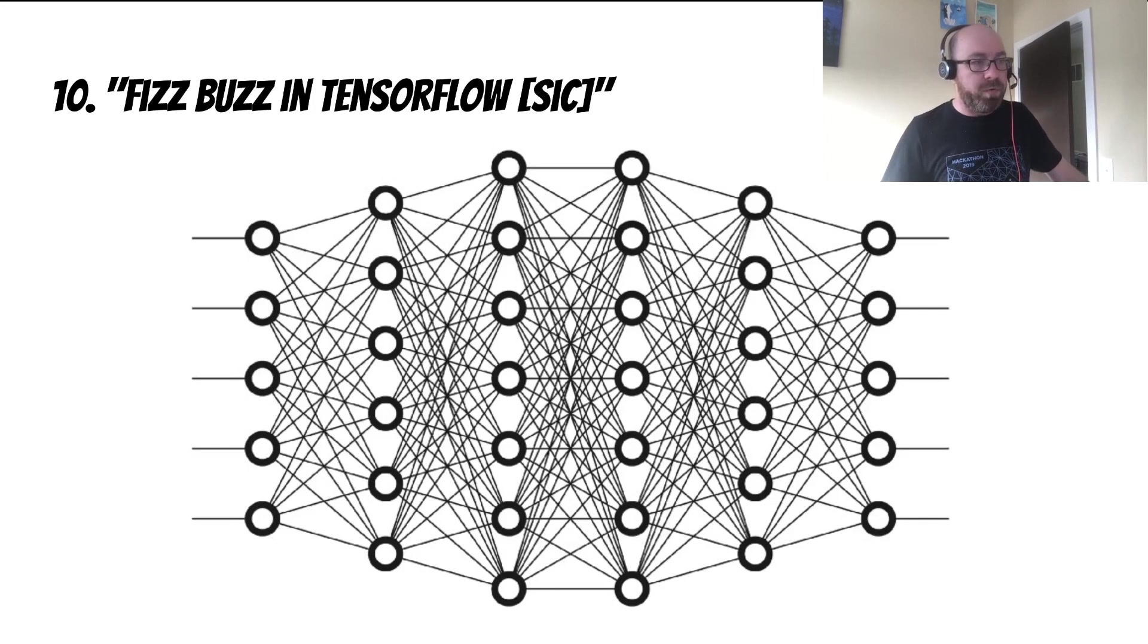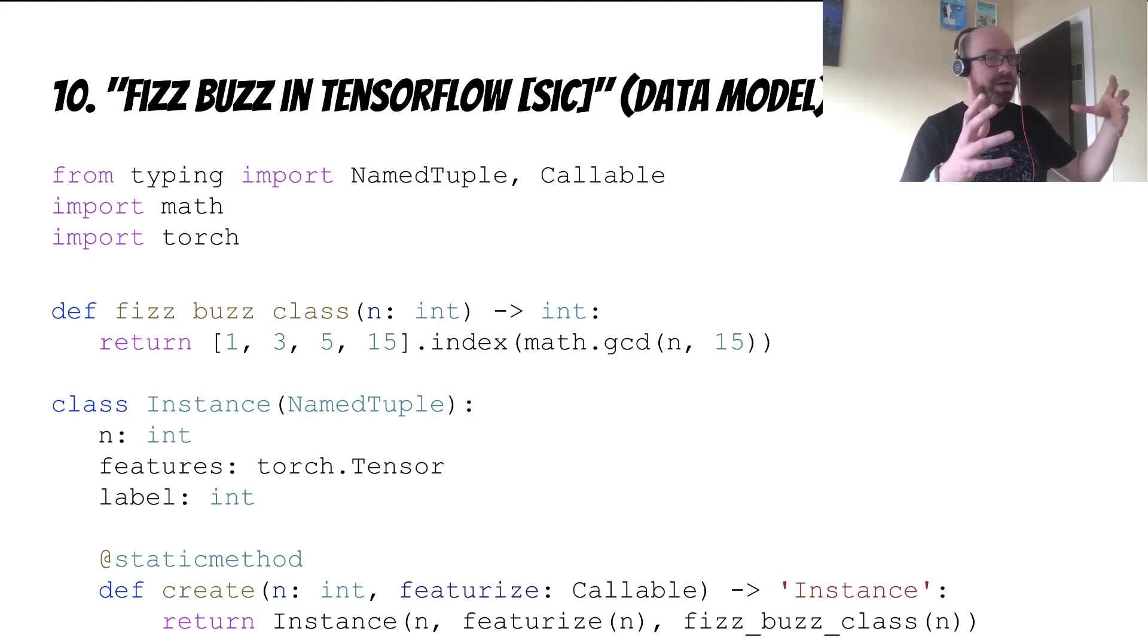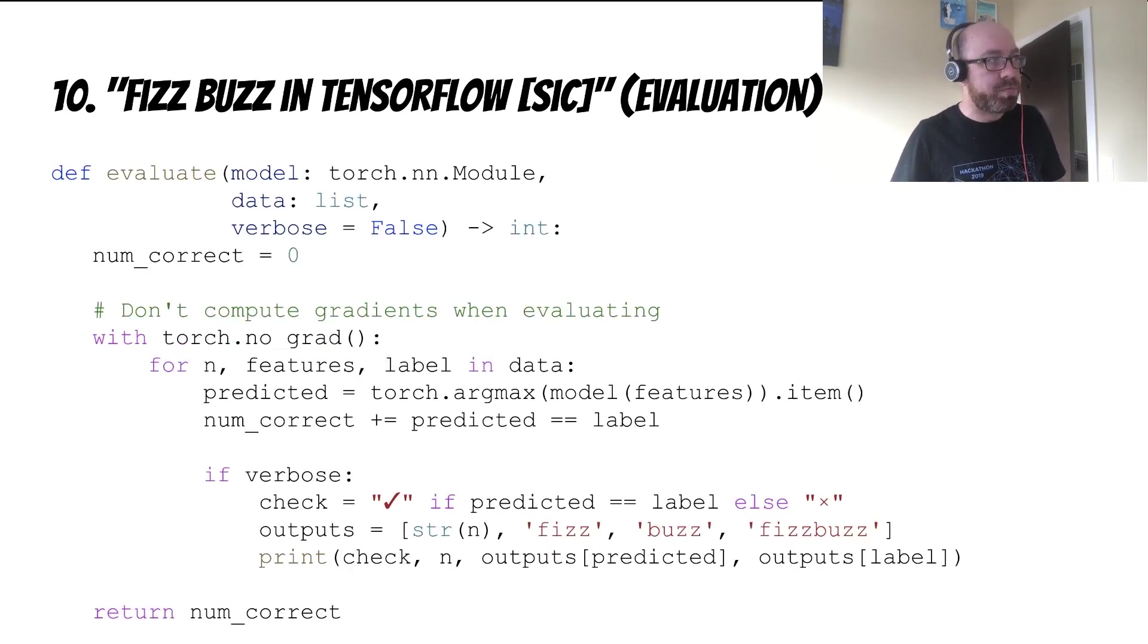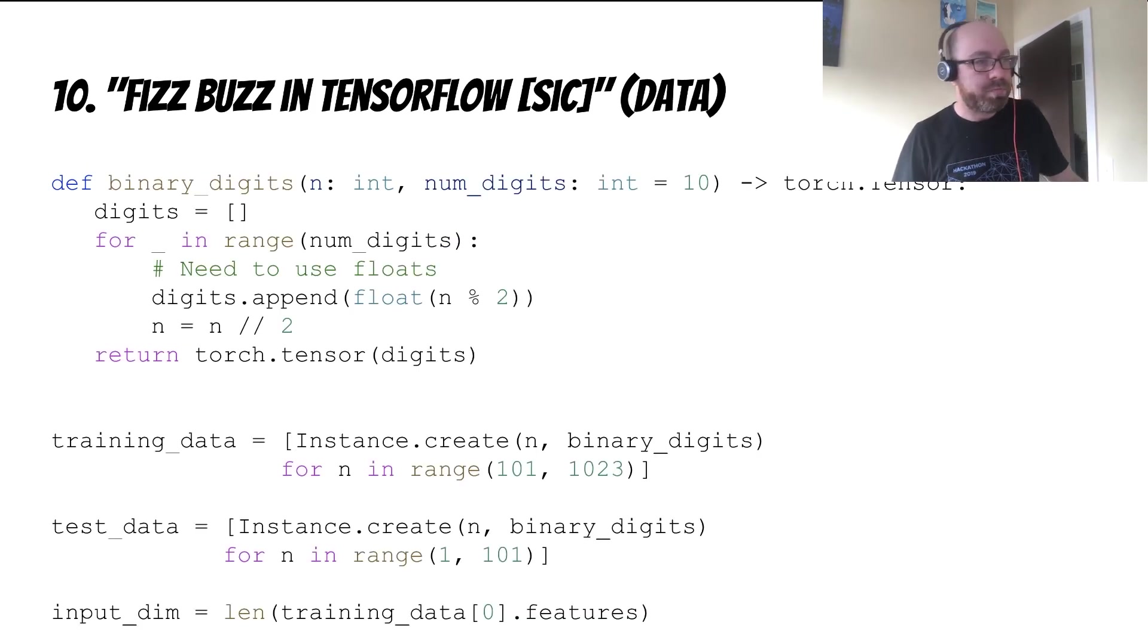And then here's the one you're waiting for, FizzBuzz in TensorFlow. Although these days I actually work in PyTorch, hence the sick, because there's actually FizzBuzz in PyTorch. Here's how I would approach FizzBuzz as a deep learning problem. First, I define a data model to represent a FizzBuzz instance for training and prediction. It's got a number, it's got some features, it's got a label, and it knows what class it should belong to. We write a helper function to evaluate a trained model so that we can make sure our model is at least somewhat good.